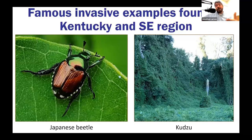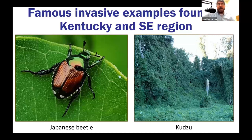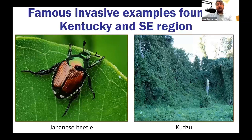Kudzu came from a purposeful introduction — it was brought in as a soil erosion control tool. Some folks determined kudzu would be a good candidate, and boy was it. It quickly escaped containment, and now we have these green carpets across parts of the southeast. It suffocates native species, crowds everything out, blocks sunlight, and definitely causes the issues we associate with invasive species.